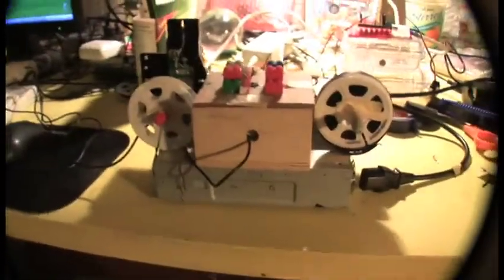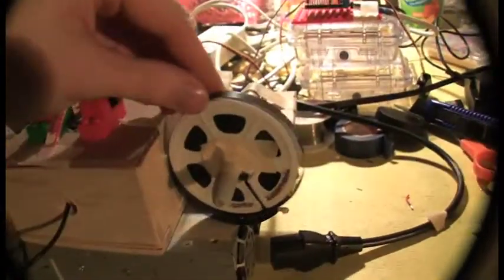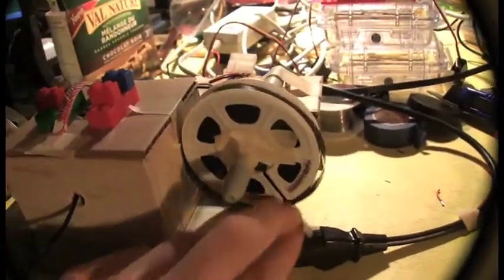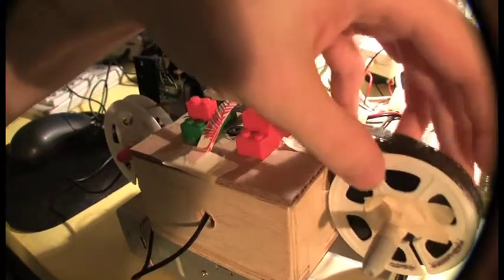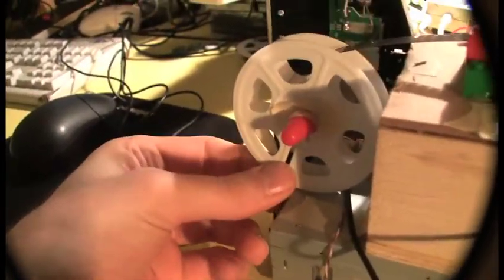So anyway, this is the machine here that I made. Basically the Super 8 comes out from this reel. It goes through these guides, this little cardboard guide down. And then we'll put it through, try to lock it into the other reel. Okay, there.